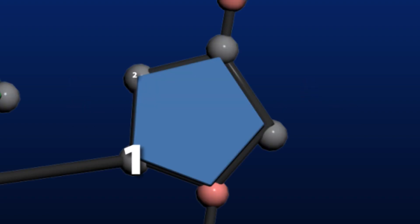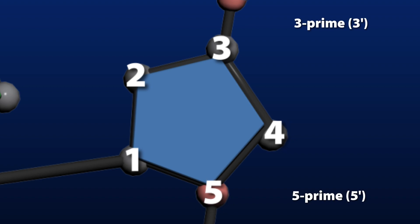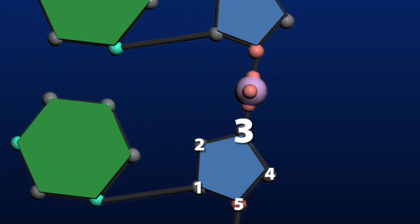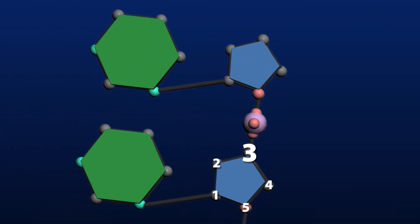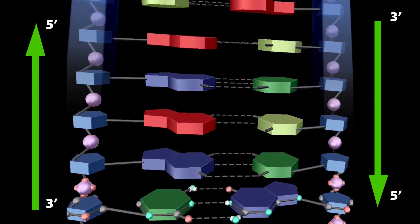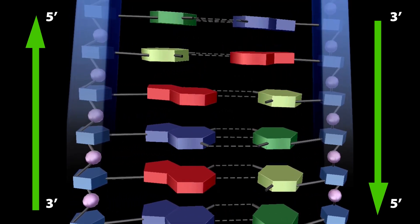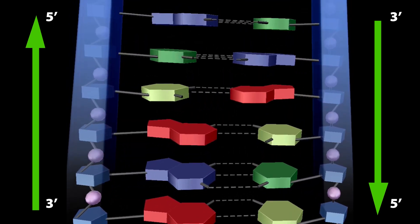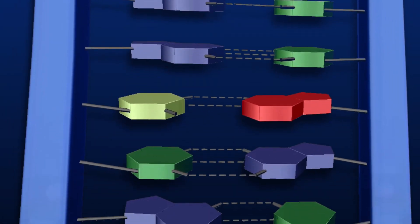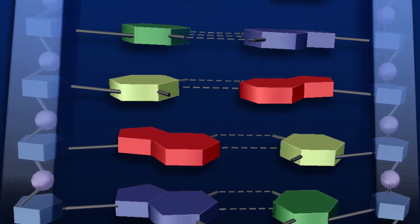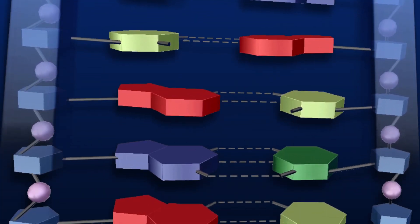The phosphate binds to the fifth or five-prime carbon on the sugar on one side, and the third or three-prime on the other. When an individual DNA strand grows, it adds phosphates and sugars to the three-prime end. This gives the DNA strand directionality, as one end is always five-prime and the other is always three-prime. When two strands join, they come together in opposite directions such that the five-prime end of one strand binds with the three-prime end of the other.